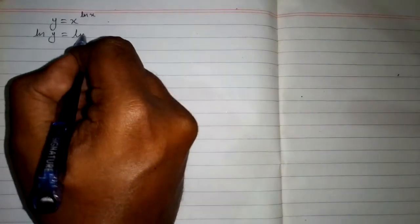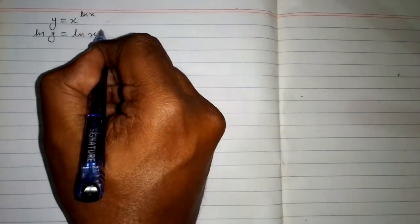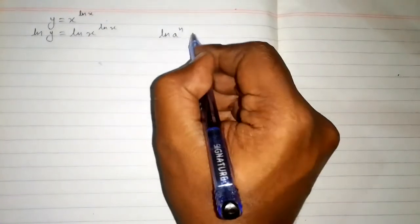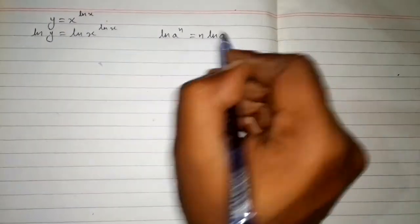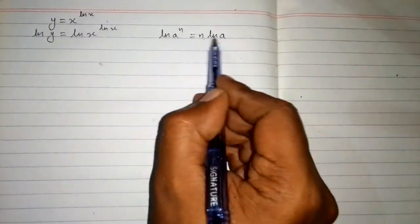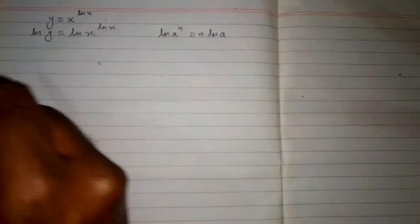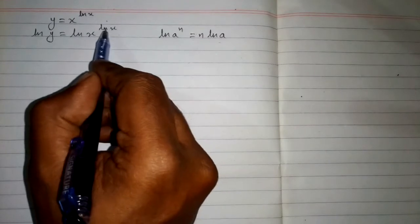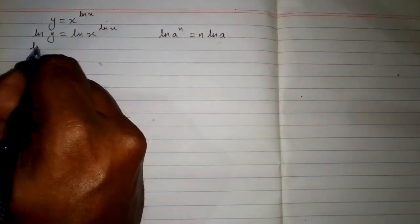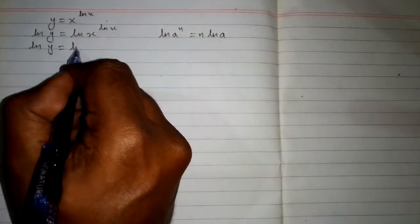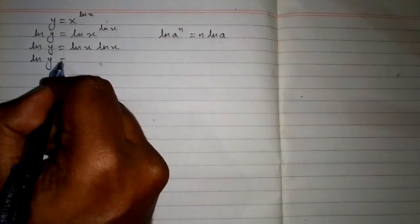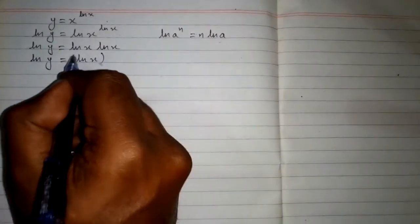So we have ln y is equal to ln of x raised to the power ln x. As we know that ln of a to the power n is equal to n times ln a. By using this identity, we can make this power the coefficient of ln. The power here is ln x, so by applying this rule, this power will become the coefficient. So we have ln y is equal to ln x times ln x, which can be written as ln y is equal to (ln x) squared.